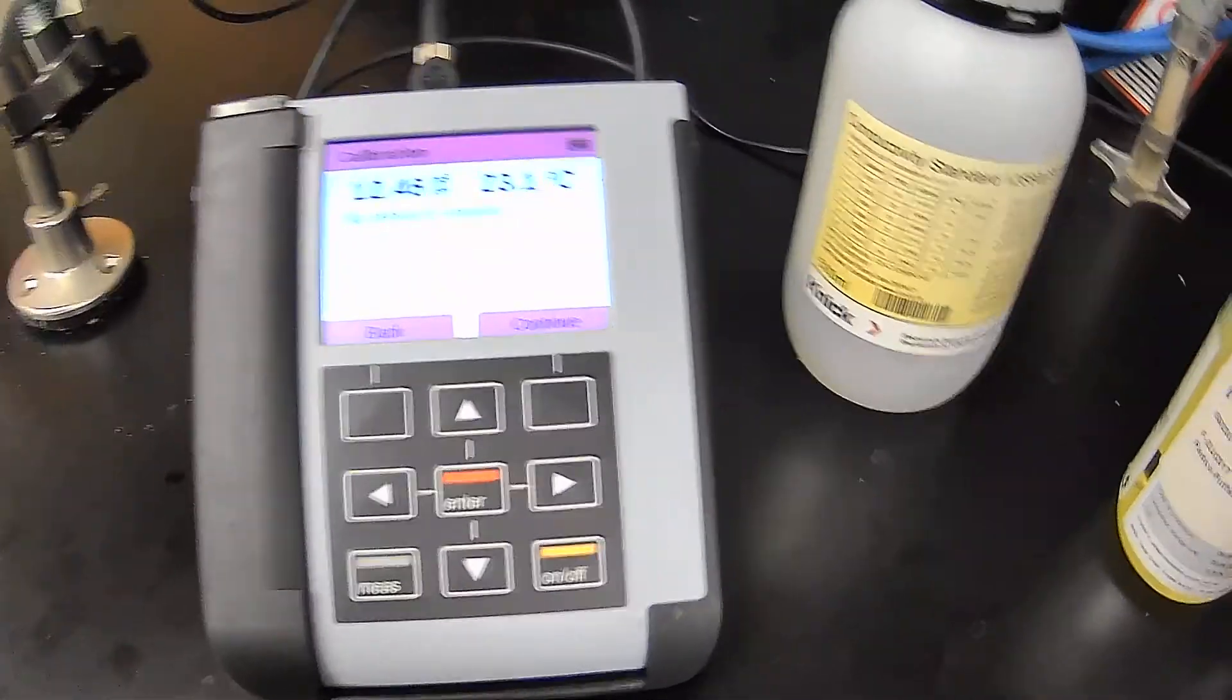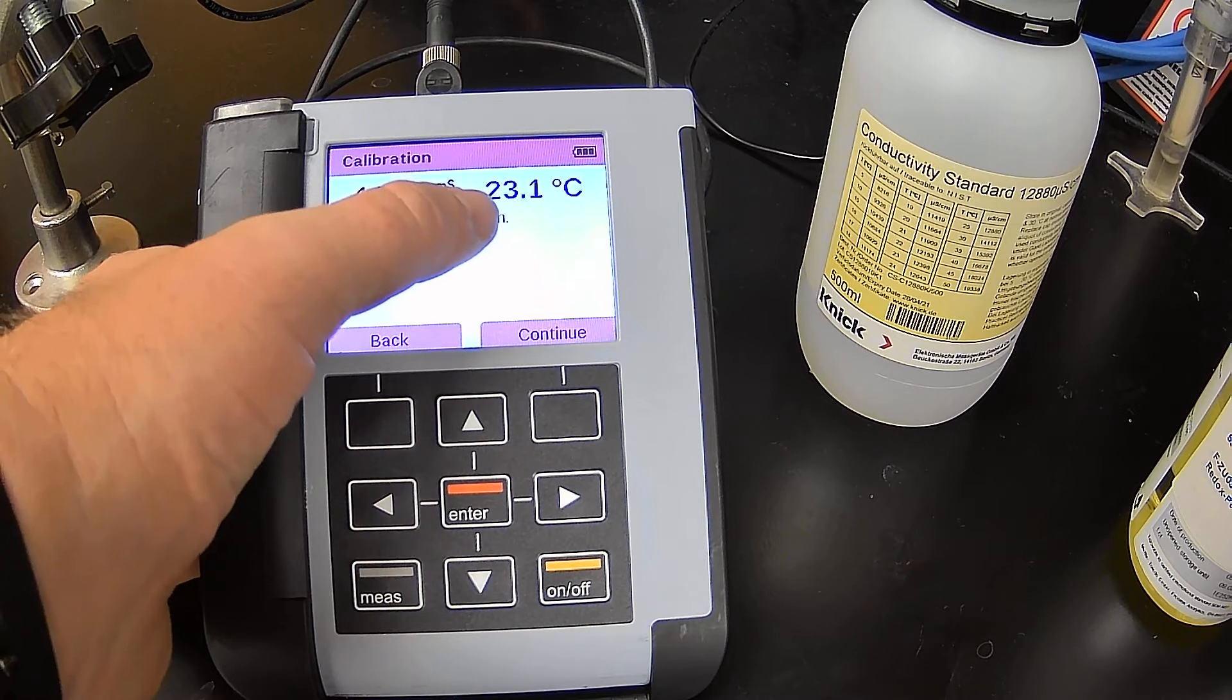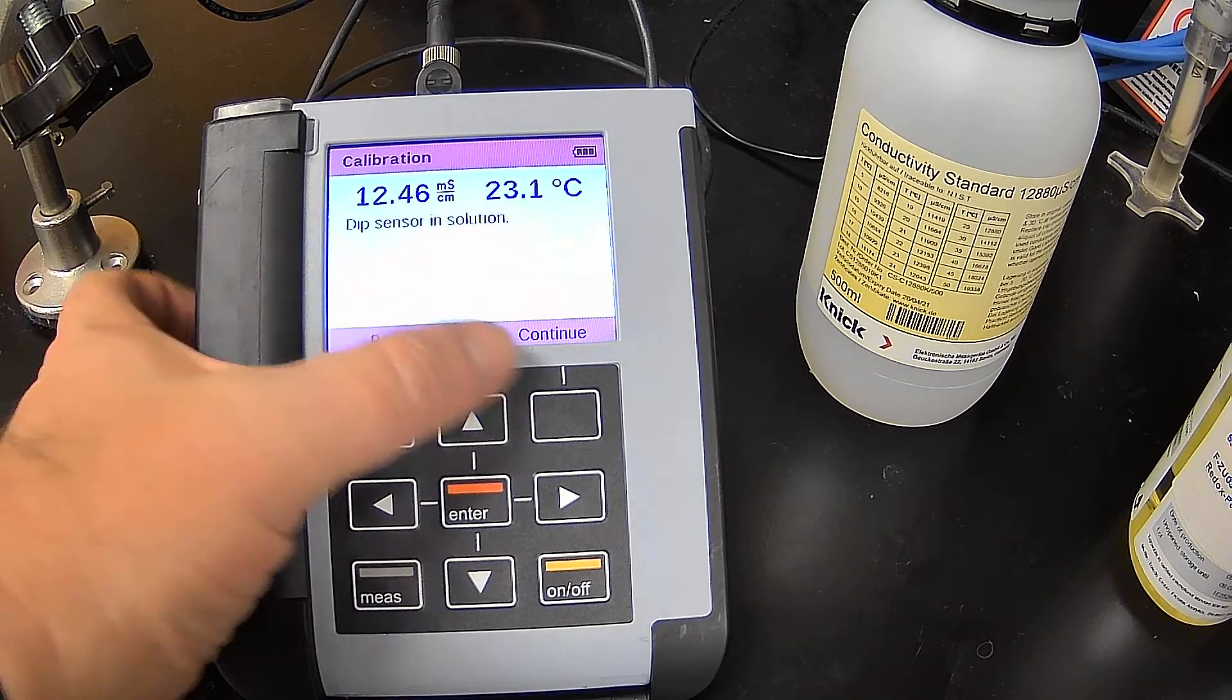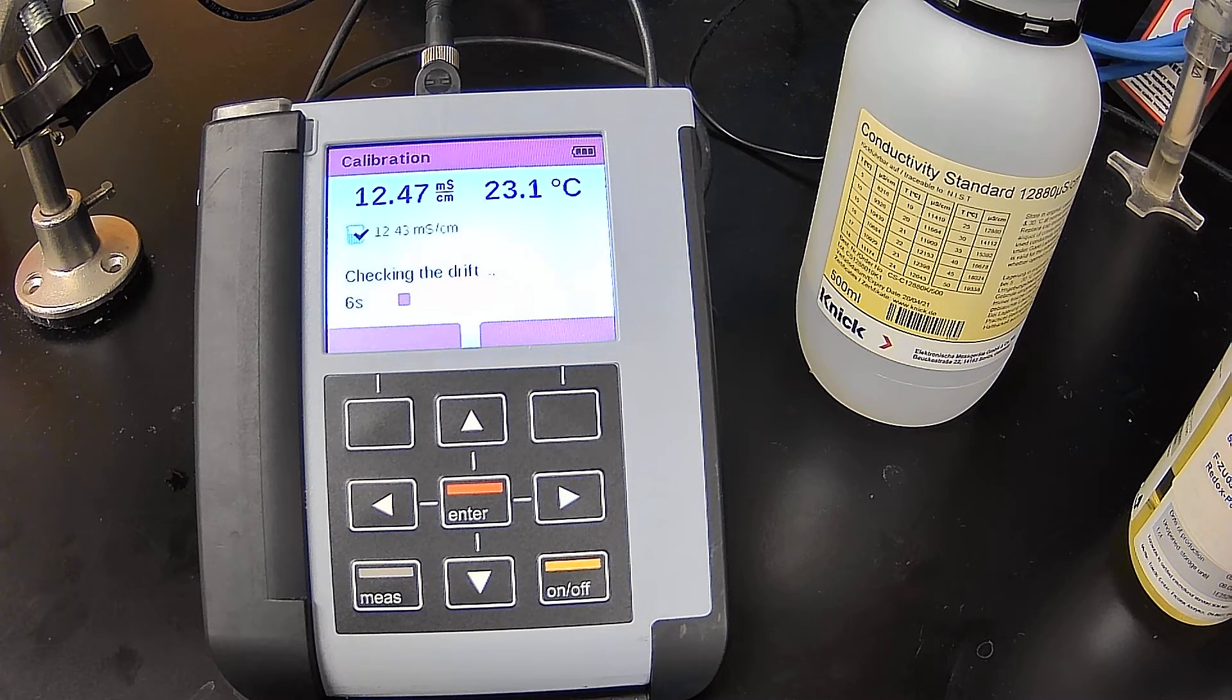So I'm going to hit continue, and then once it identifies what the solution is, which it already has, and it checks for the drift, it's going to adjust the cell constant to match the value that it's reading.